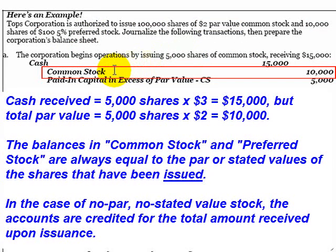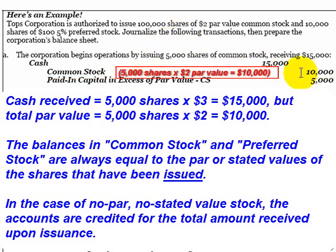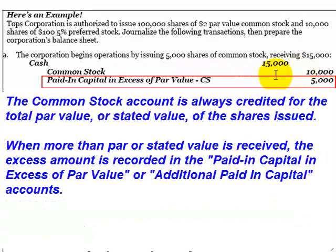The credit to common stock has to go for par value. The balance in common stock is always equal to the par value of the shares that have been issued. So 5,000 shares at $2 par value gives us a credit to common stock for $10,000. If the shares are issued for more than par value, then the credit goes to the paid-in capital in excess account.